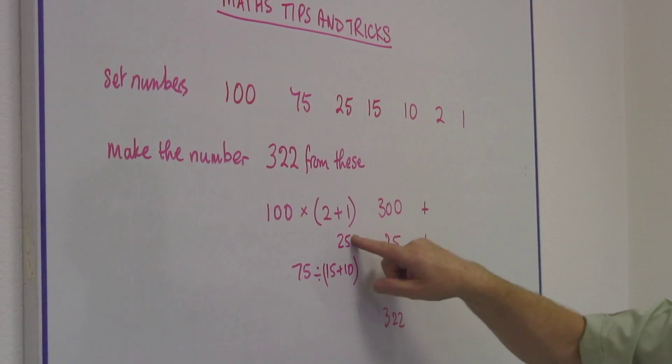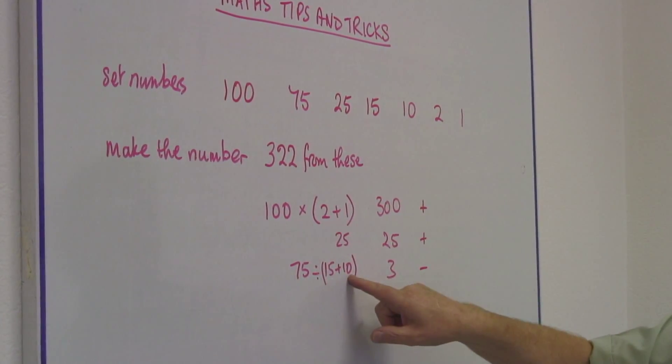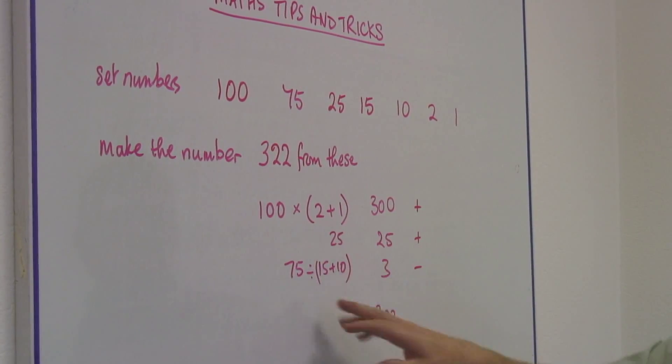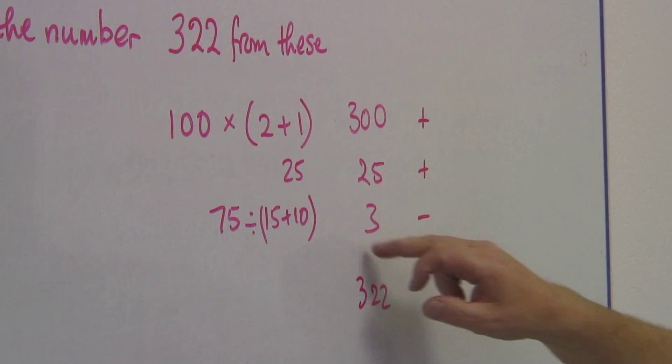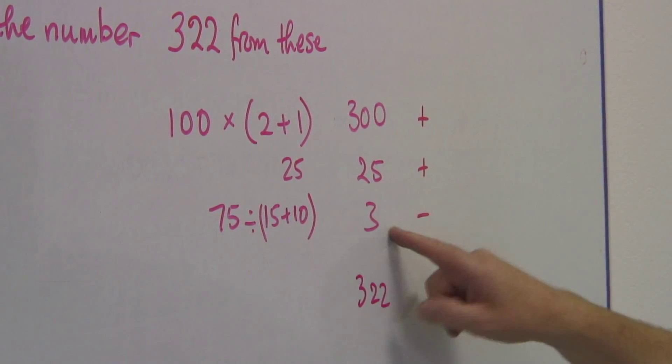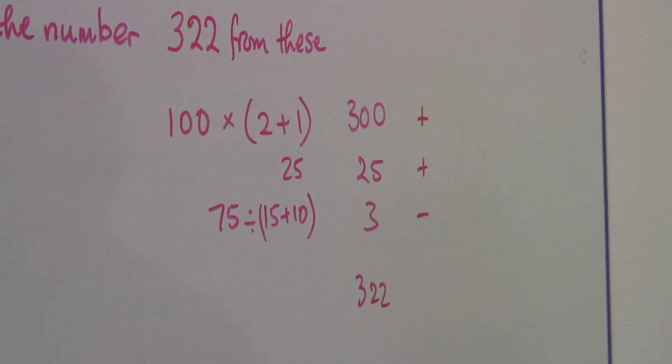I've got a 25. Fifteen plus ten is 25 also. I can use those either way around. Seventy-five divided by 25 gives me 3. I take the three numbers, add those two, take that one away, I get 322.